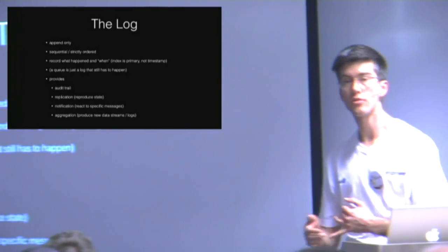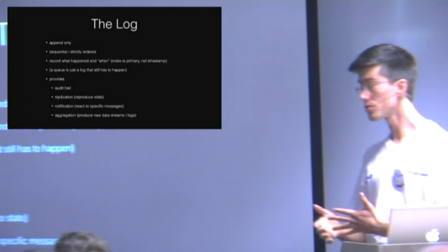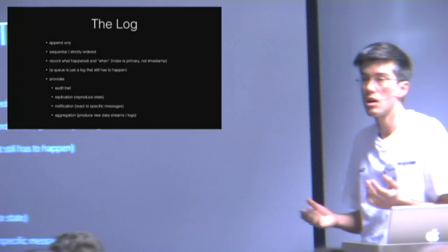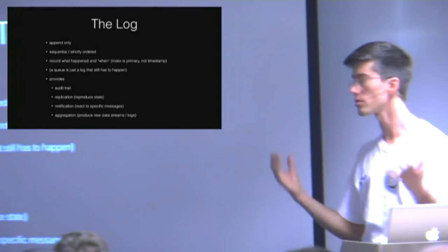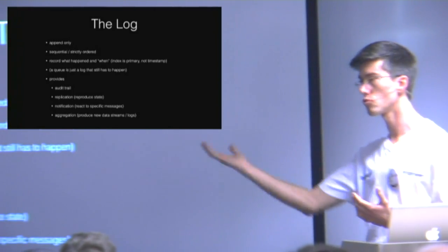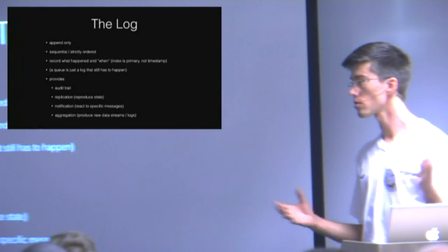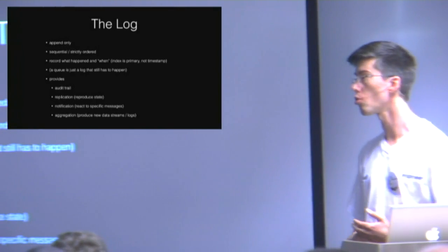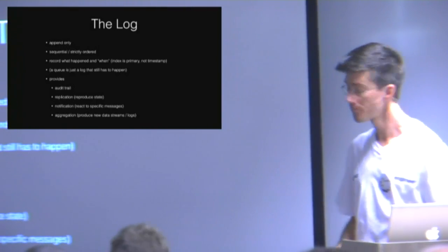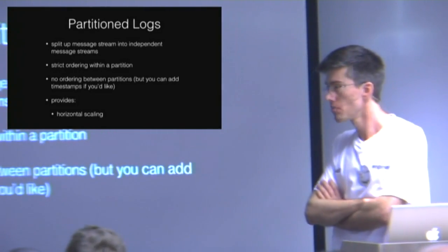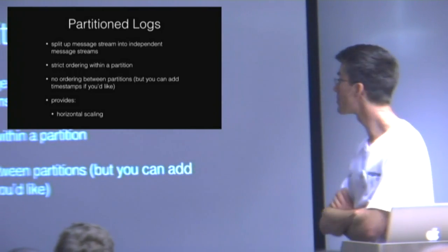So what the log gives you is: firstly an audit trail of what happened; replication — reproducing state; notification — if you're interested in a particular entry or type of entry in a log, whether it's part of your monitoring system or some state transition on some object in your system, you can look out for those and send off another event to notify somebody; and then aggregation — you can take these log files, go through them and generate interesting reports or new data streams by aggregating simpler data streams. So essentially Apache Kafka is a log.